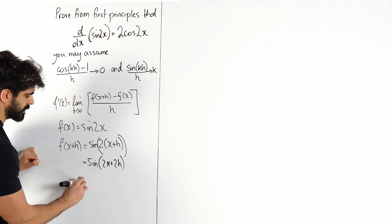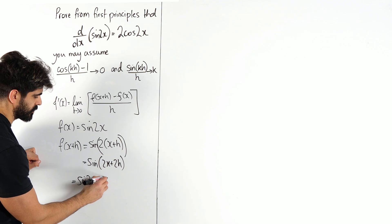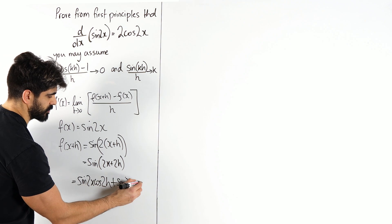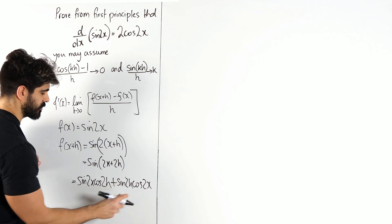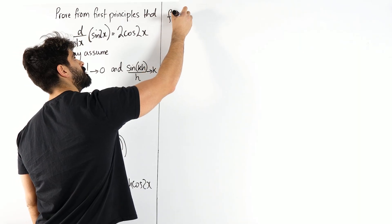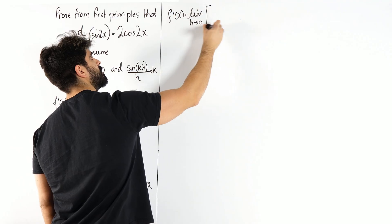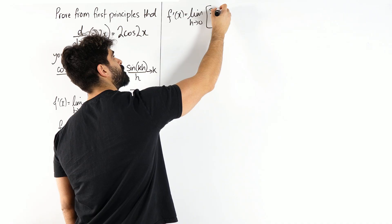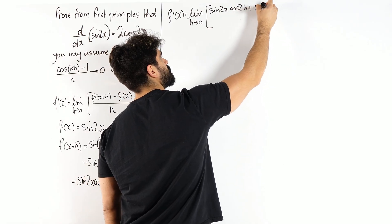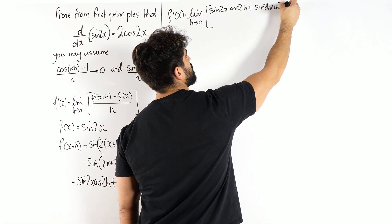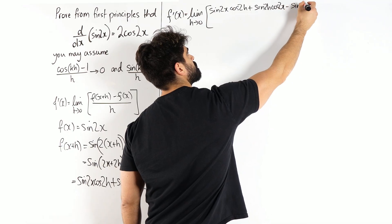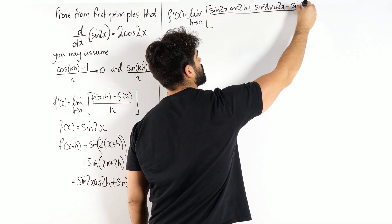The addition rule for sine goes sine cos plus sine cos. So we're going to get sine 2x cos 2h — sine keeps the sine the same — plus sine 2h cos 2x. Sine cos, sine cos, and then we just change the angle. Taking this expansion and substituting into the first principles formula, f'(x) is the limit as h tends to 0 of sine 2x cos 2h plus sine 2h cos 2x.